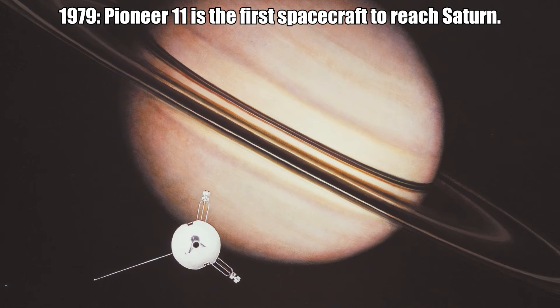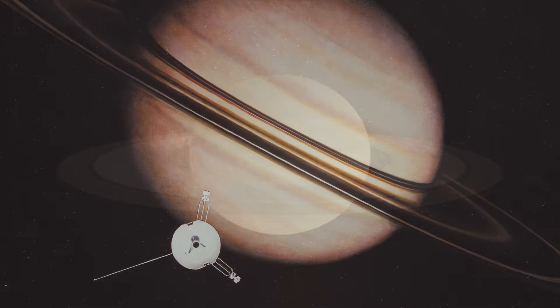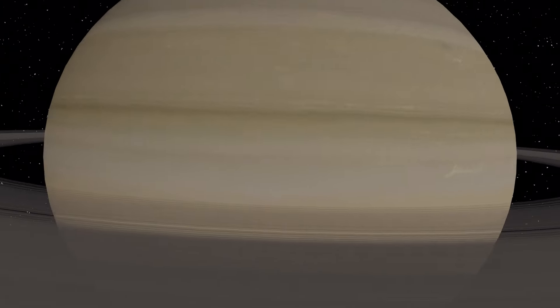1979, Pioneer 11 is the first spacecraft to reach Saturn. Among Pioneer 11's many discoveries are Saturn's F-ring and a new moon.